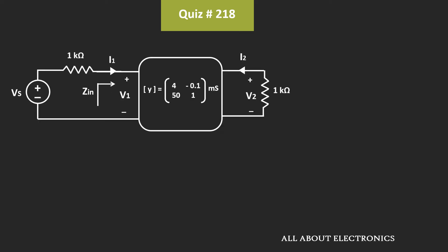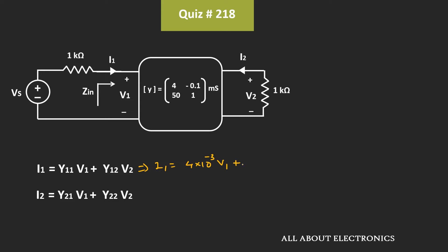For the Y parameters, we can write the expression of i1 and i2 as: i1 = y11·v1 + y12·v2, and i2 = y21·v1 + y22·v2. Substituting the given values, i1 = 4×10⁻³·v1 + (−0.1×10⁻³)·v2, where the unit of the Y parameter is millisiemens. Similarly, i2 = 50×10⁻³·v1 + 10⁻³·v2.